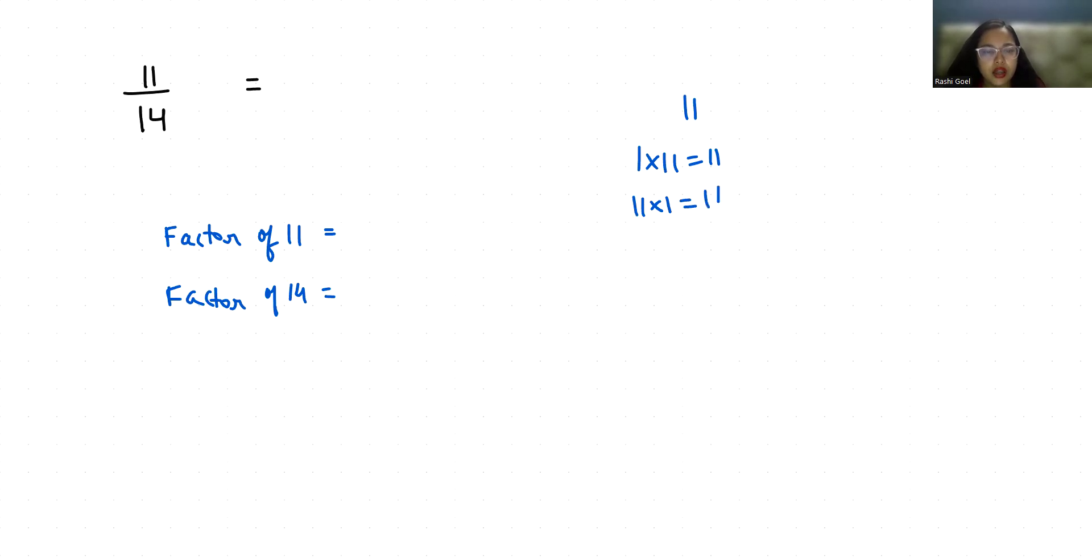Now 14, starting with 1: 1 times 14 is 14, 2 times 7 is 14, then 7 times 2 is 14, and 14 times 1 is 14. So what are the factors? 1, 2, 7, and 14.